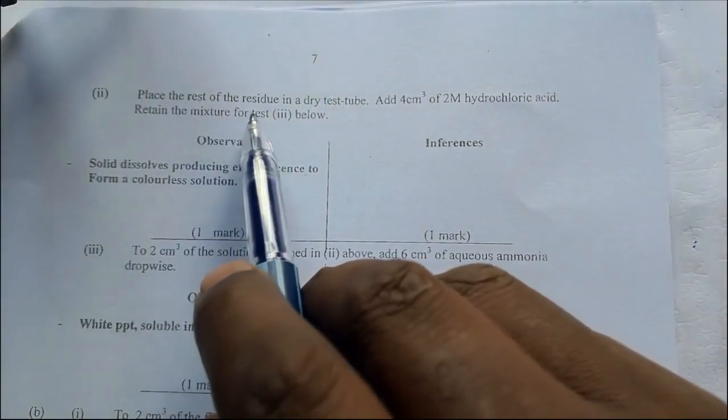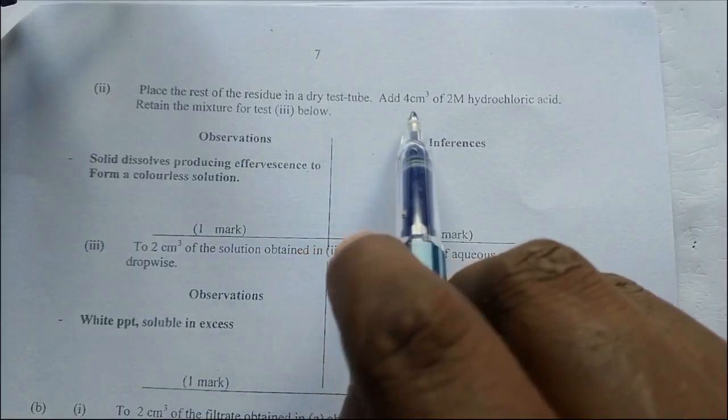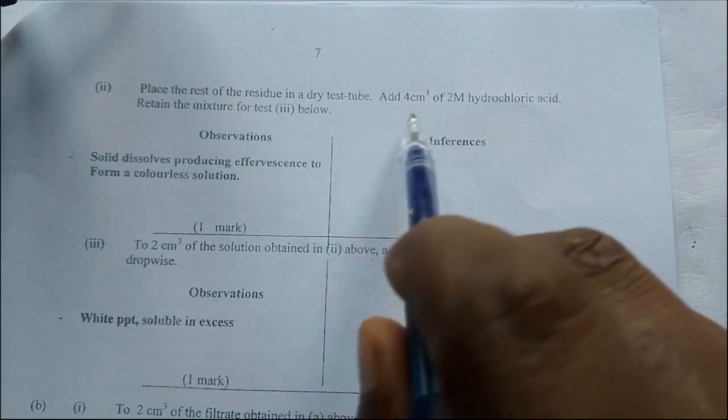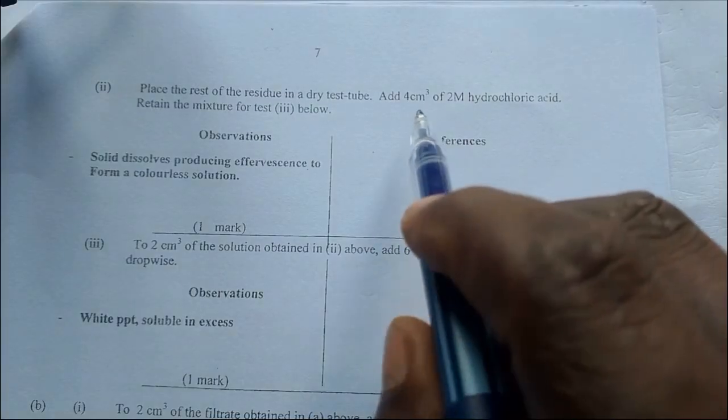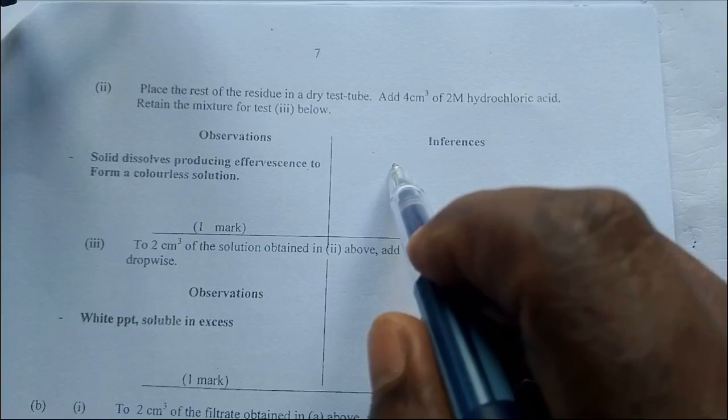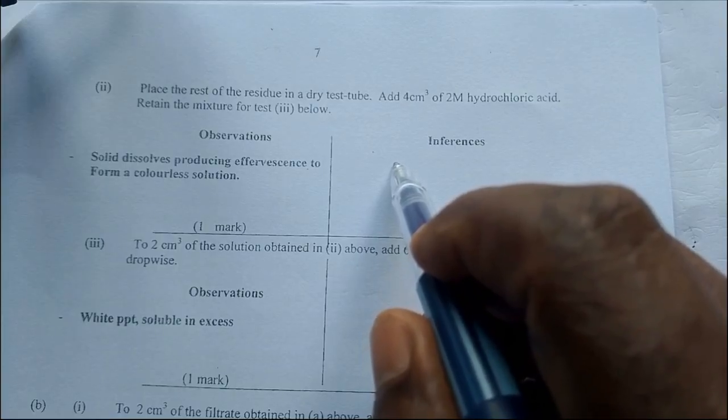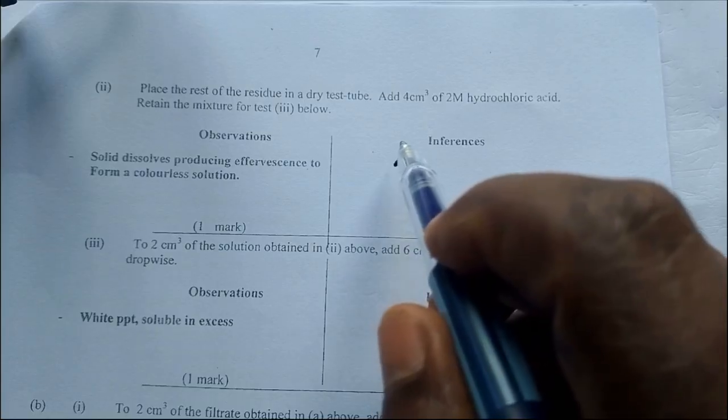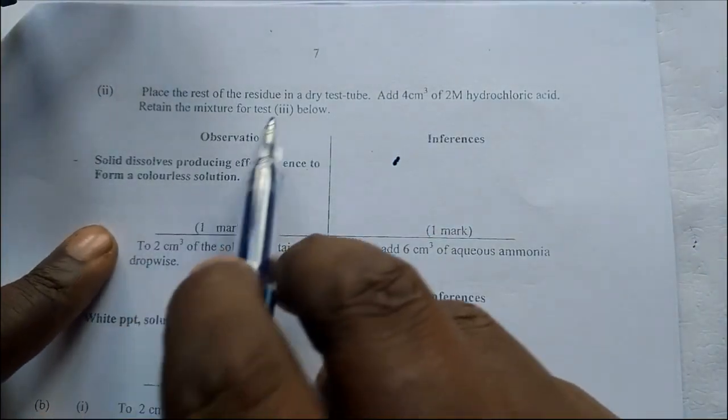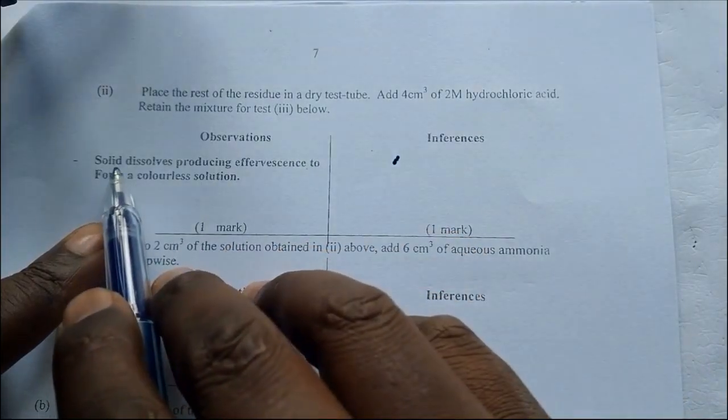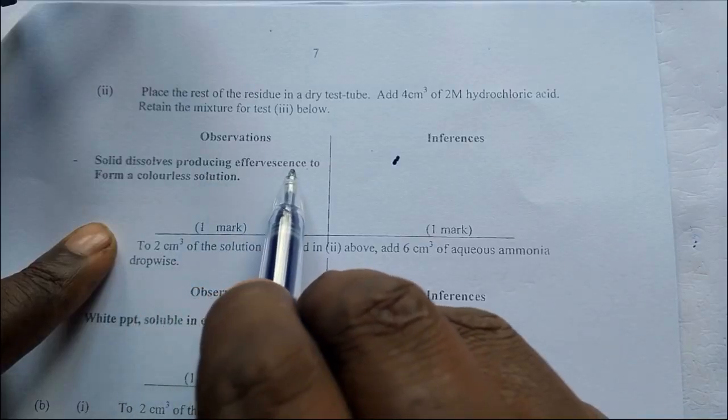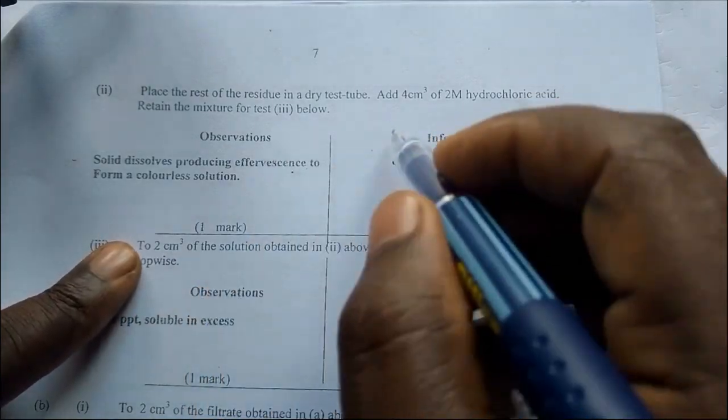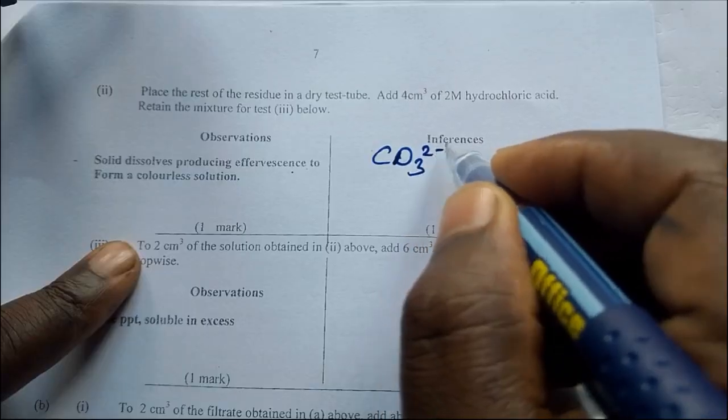Place the rest of the residue in a dry test tube. Add 4 cm³ of 2 molar hydrochloric acid. I have always told you, whenever you are adding a seed into a test tube containing a solid, one thing you expect is effervescence. So if it is, effervescence will occur or not. Therefore when the acid was added, the solid dissolves producing effervescence.